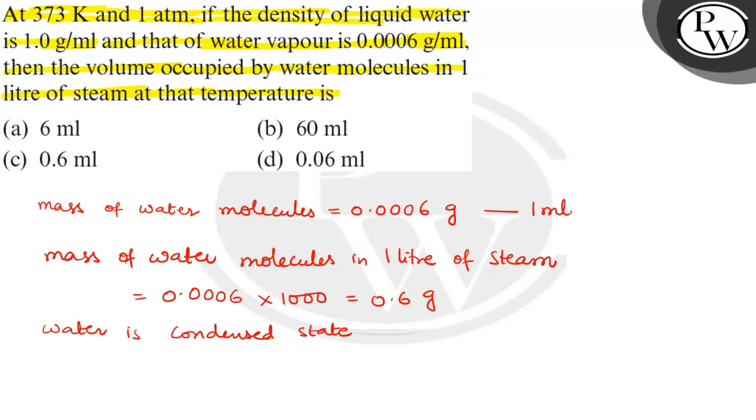the volume occupied by water molecules is equal to 0.6 grams per ml. That is density, that is 1, 1.0 gram per ml, is equal to 0.6 ml.